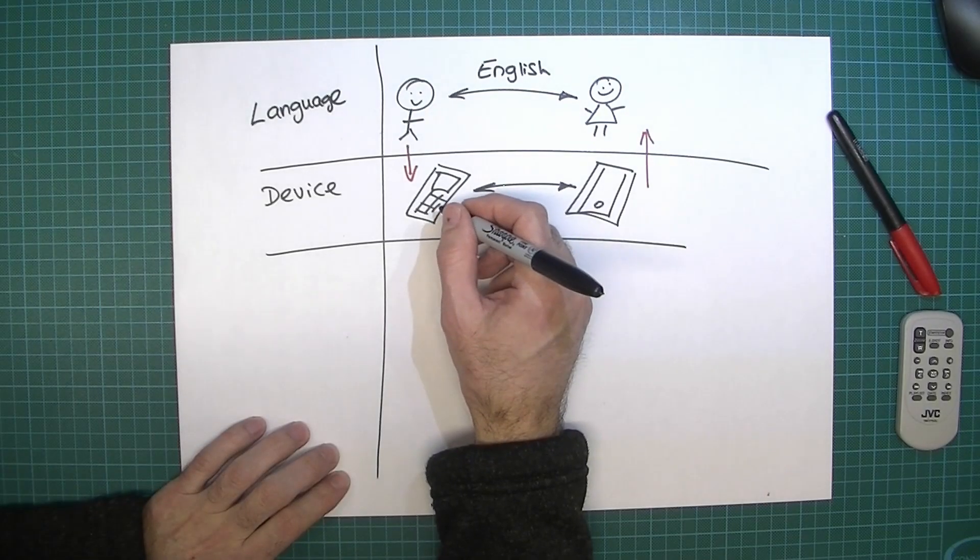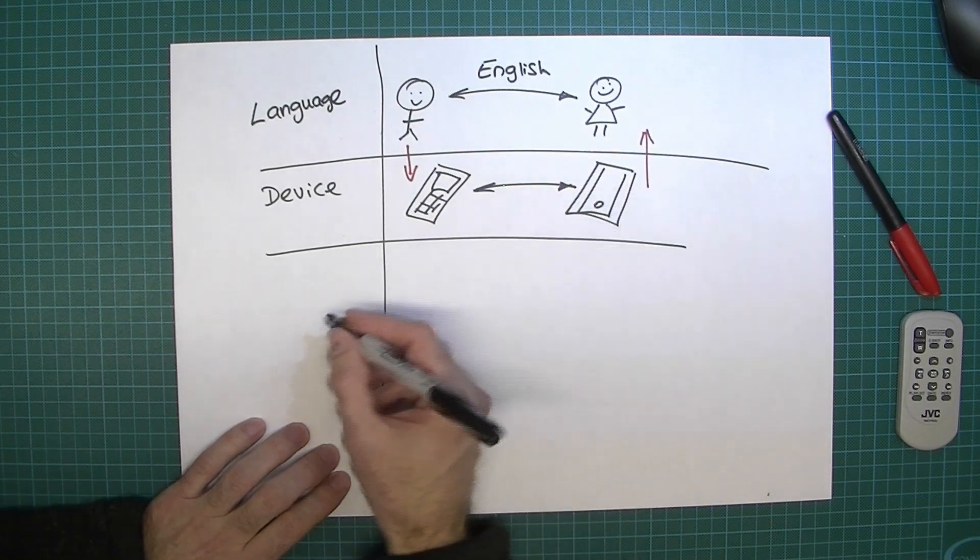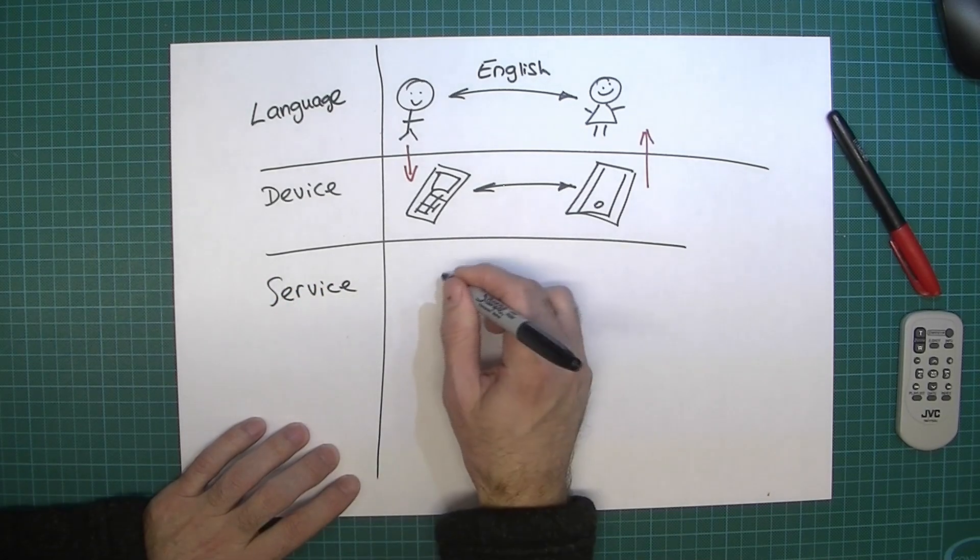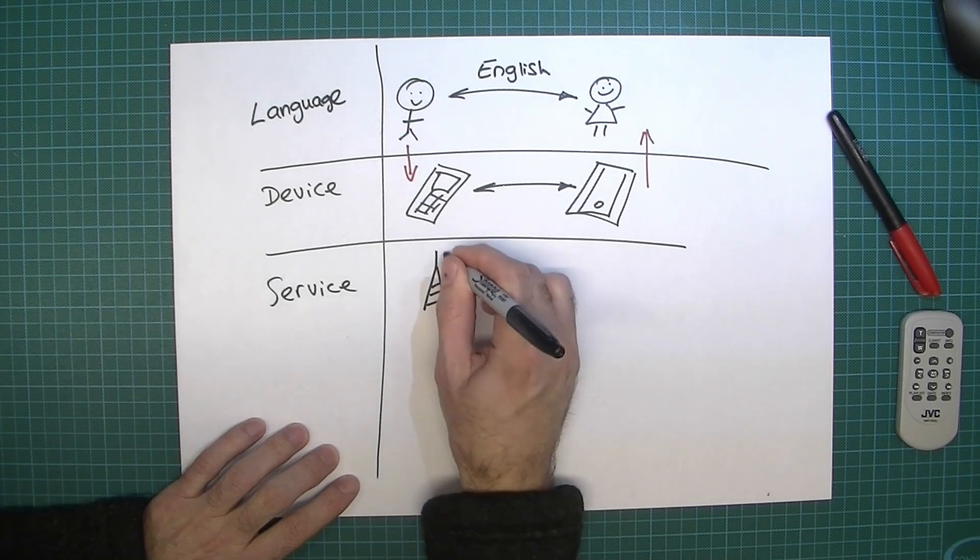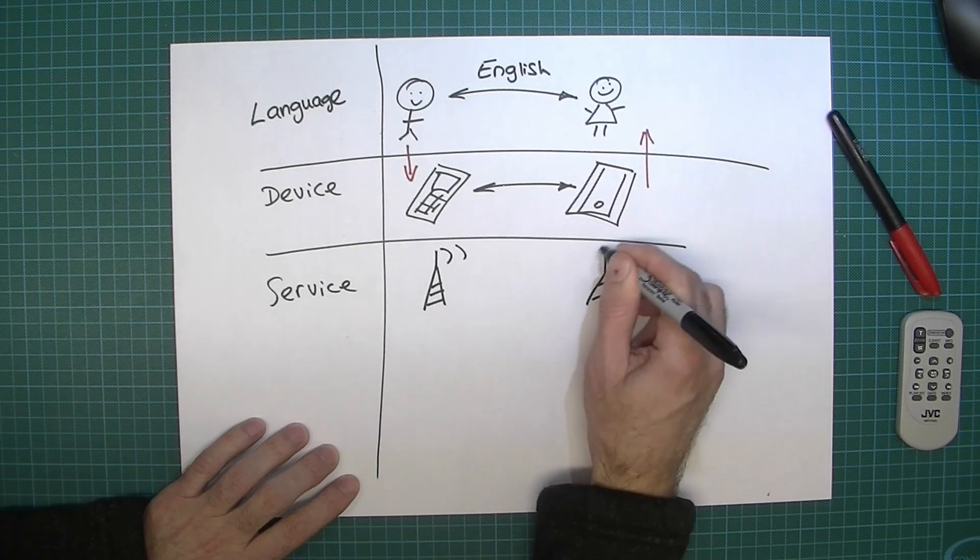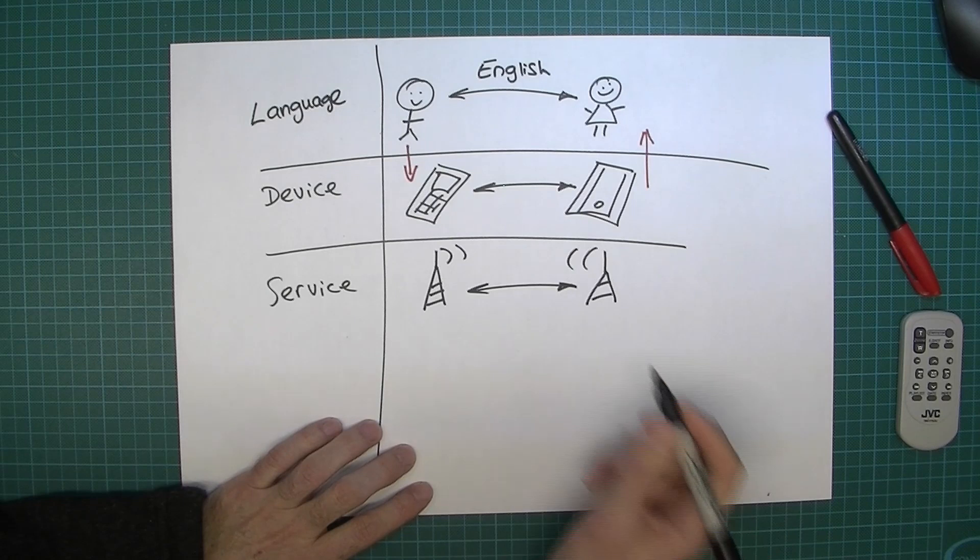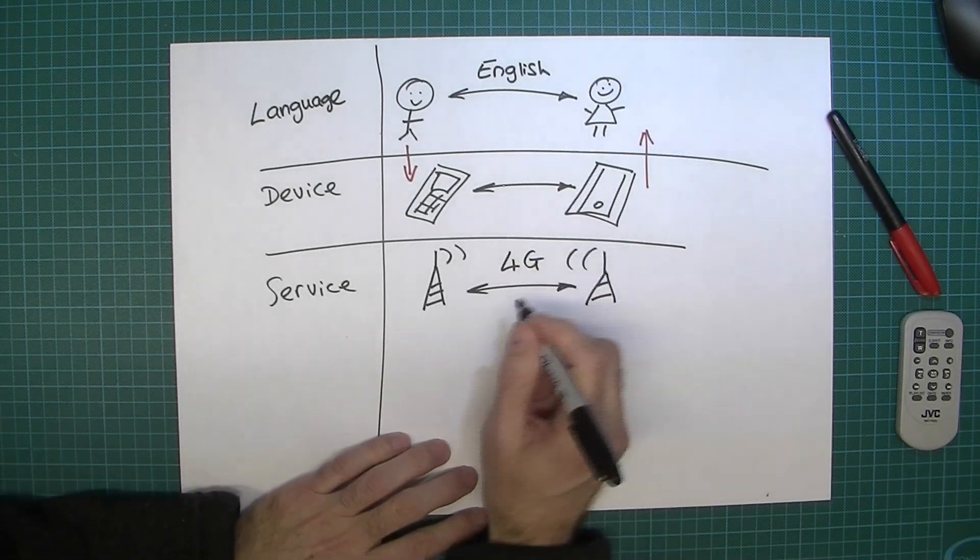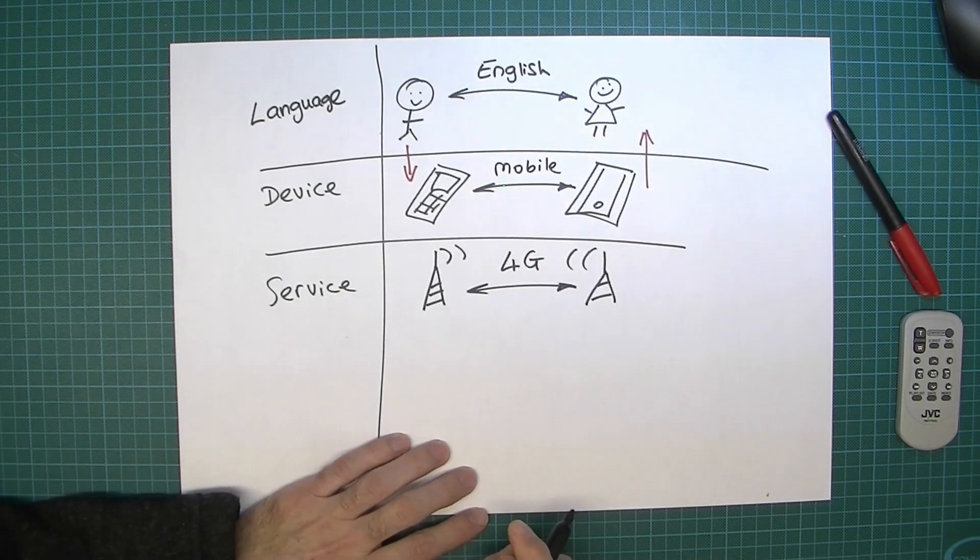So how does a phone communicate with another phone? Well presumably it needs some sort of service. And I'm going to assume here that we're using some sort of mobile service so I'll have a transmitter like this. And so one transmitter communicates with another transmitter and I'll just assume that it's 4G, but it could be anything else. I suppose we better just put in mobile there like that.